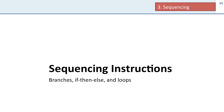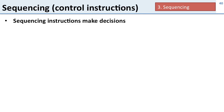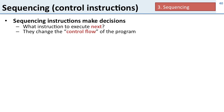Now we're going to talk about sequencing instructions. These are the instructions we use for branches, if-then-else statements, and loops — anything where we're going to do different things depending on the data. Sequencing instructions make decisions: specifically, what instructions to execute next. Should we do the next instruction or jump somewhere else? They change what's called the control flow of the program, where the program is going.